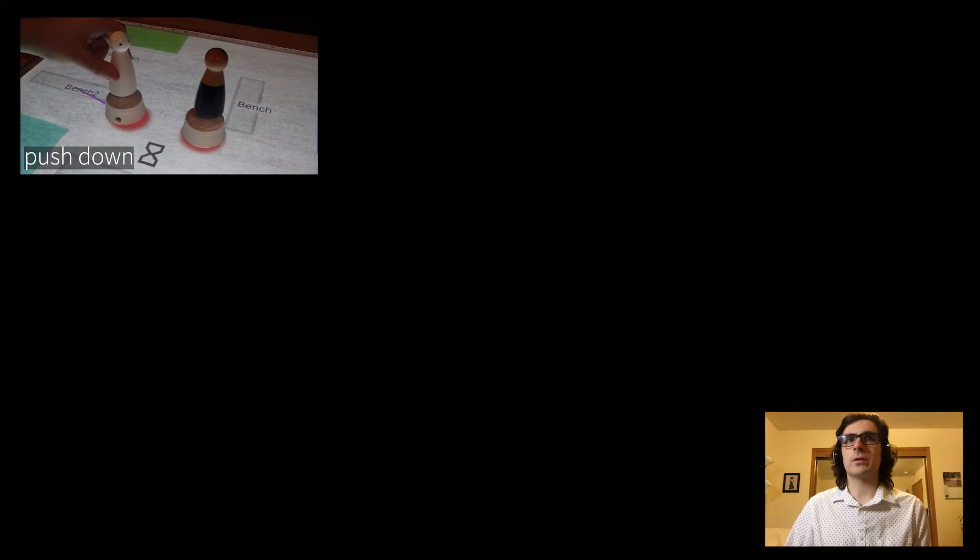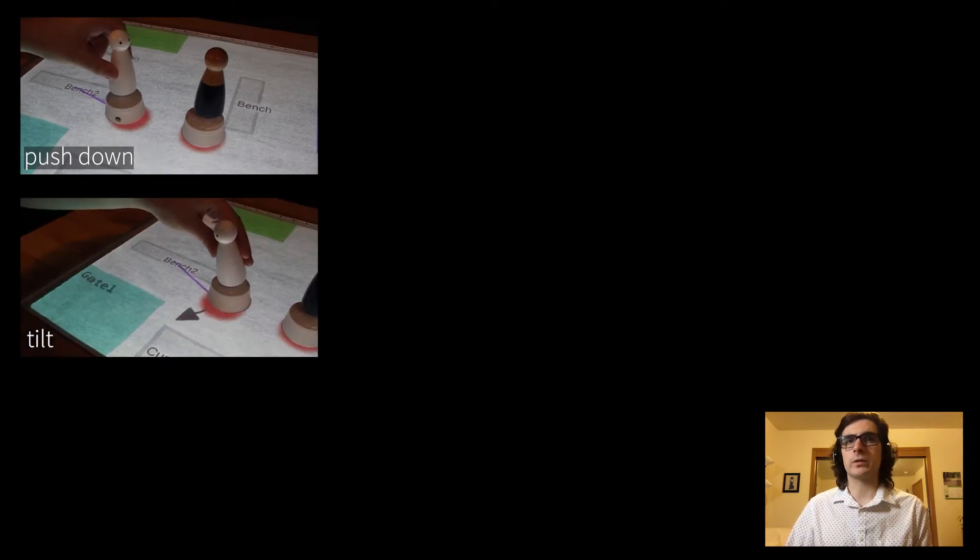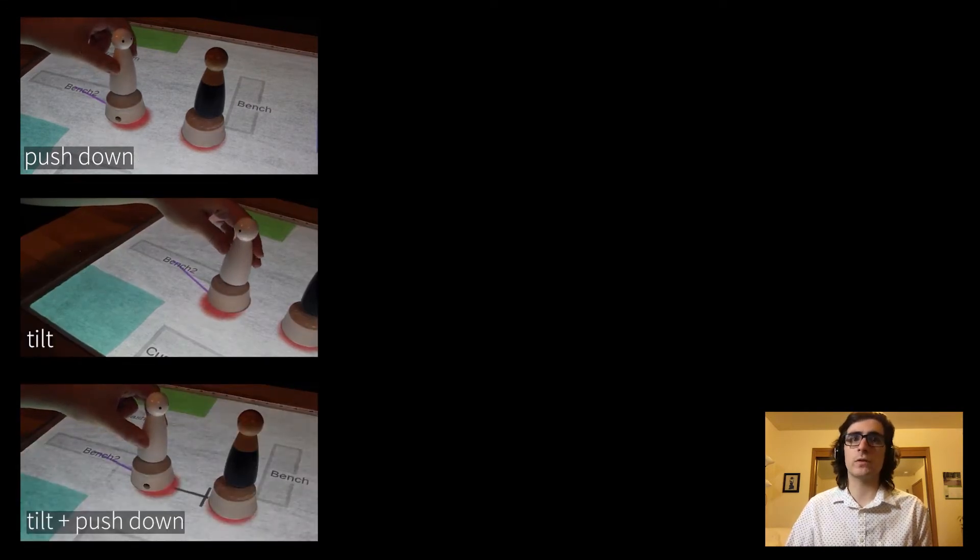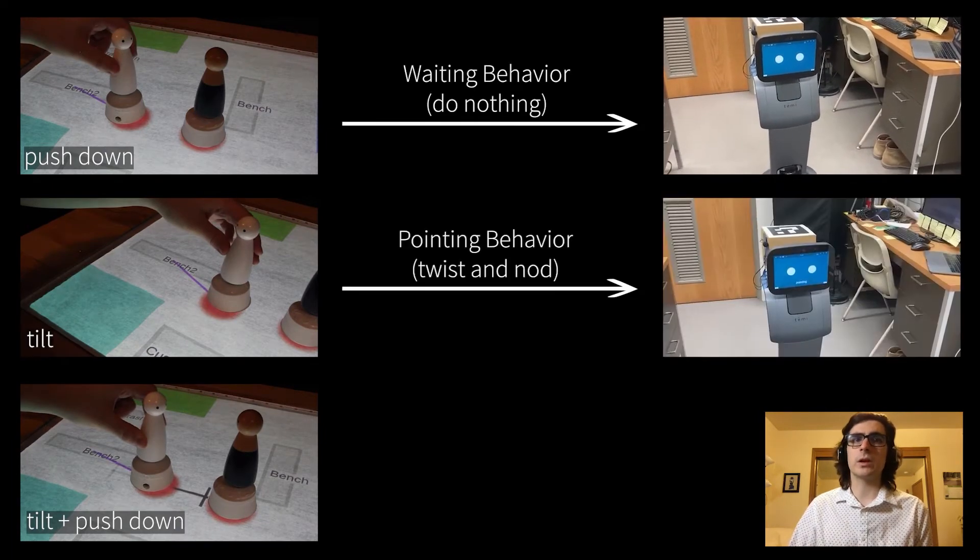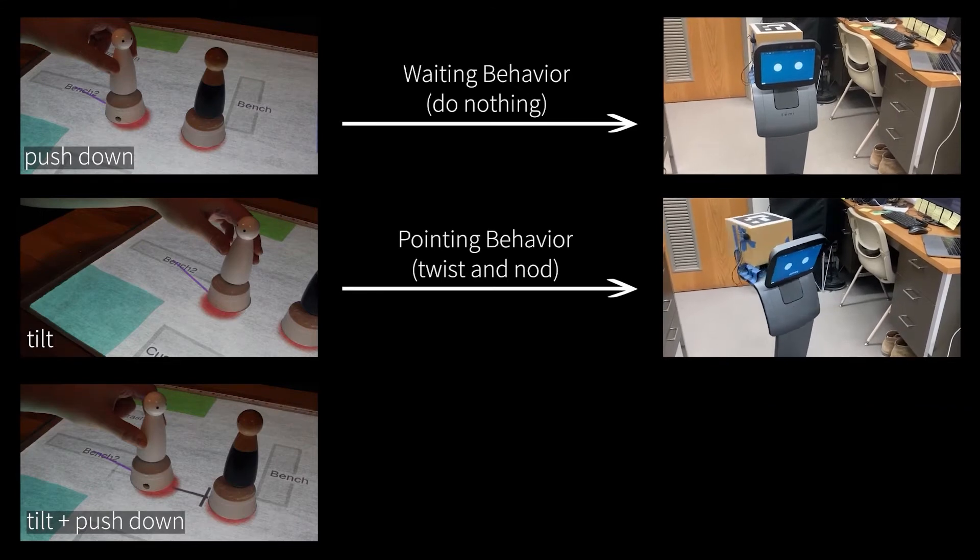If the demonstrator pushes the figurine down, tilts the figurine in a particular direction, or both tilts it and pushes down at the same time, these behaviors will translate to the robot waiting for further input, pointing in a particular location, and nodding its head.